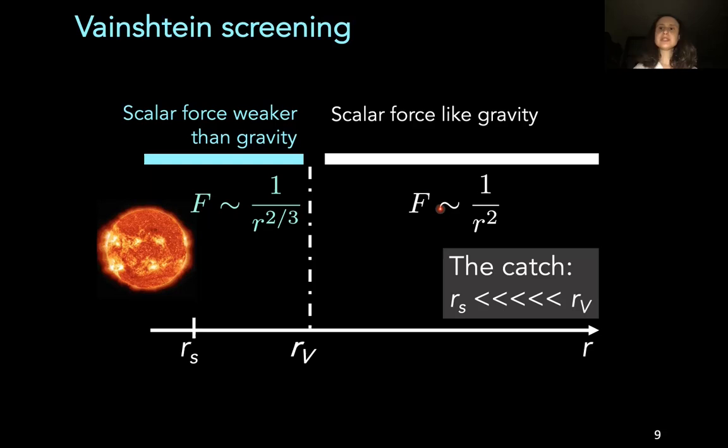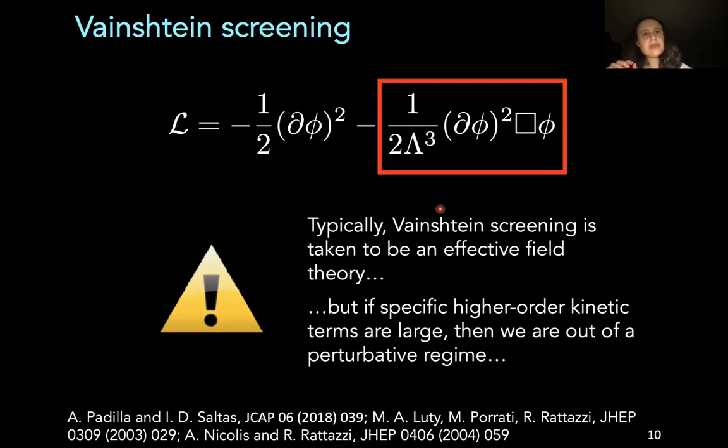Now here is the problem. Theories with Vainshtein screening typically have a very small limit of validity compared to general relativity. For instance, they can be valid up to a scale that's kilometer scale. The usual reasoning is that this is not a problem because your theory with Vainshtein screening is just an effective theory of a more complete theory. So it doesn't matter if it breaks down too early, there's going to be a bigger and better theory that takes in.